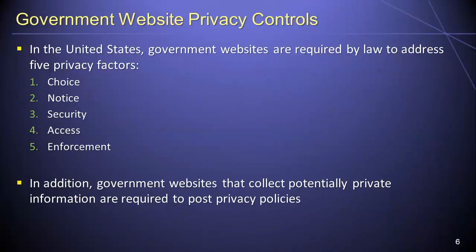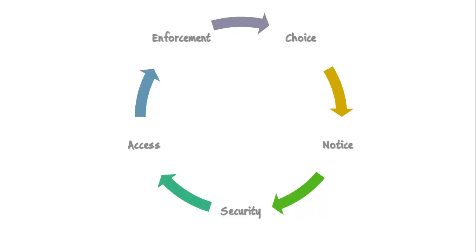Many people do not realize that in the United States, government websites are required by law to address five specific factors relating to privacy: choice, notice, security, access, and enforcement. With respect to choice, individuals using government websites must be given the option to choose whether to provide personal information, and if so, must be able to choose how those data will be used. With respect to notice, the data collection practices used by a government website must be disclosed to individuals before the website collects their personal information.